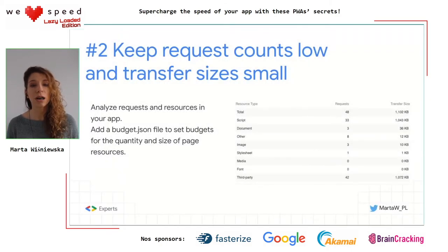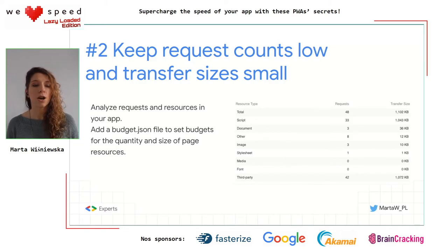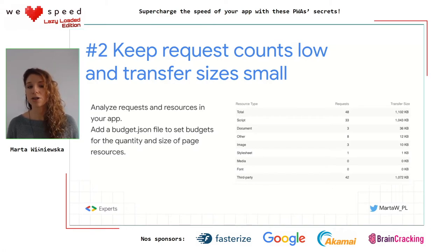Tip number two: keep request count low and transfer sizes small. The best approach is to analyze requests and resources in your app using the tool I presented. Another tip is to add a budget.json file to your project and set budget limits for specific metrics — for example, you can set limits for first meaningful paint, overall page size, and total number of requests, making it easier to control these metrics.